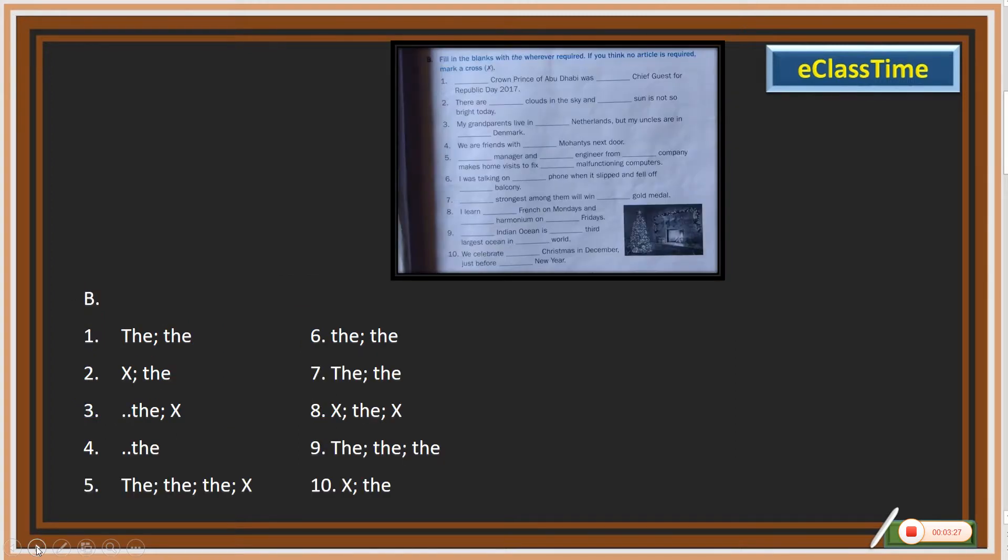Coming down to number B. Number B also is fill in the blanks with whatever required, if you need. And here see some places you can see X, the cross line. That means in those places the articles are not necessary.